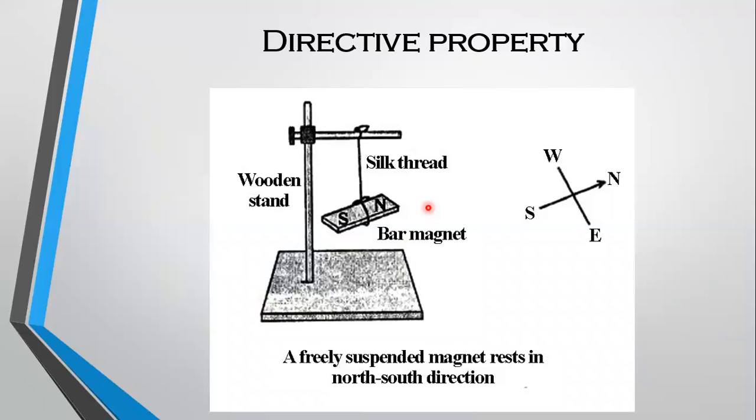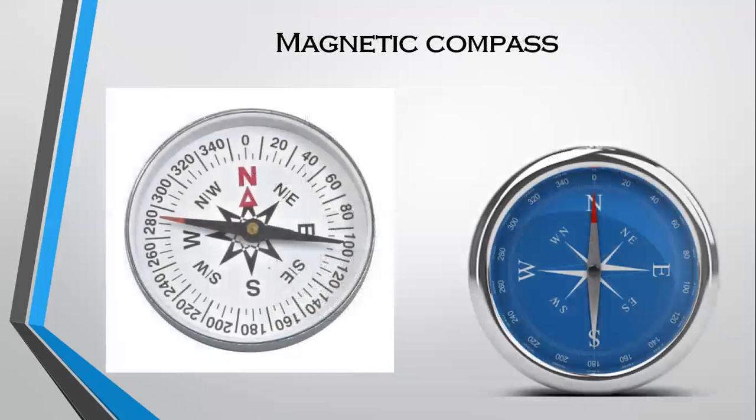Later on a device was developed based on this property of magnets. It is known as the magnetic compass. A compass is usually a small box with a glass cover on it. A magnetized needle is pivoted inside the box which can rotate freely. The compass also has a dial with directions marked on it.